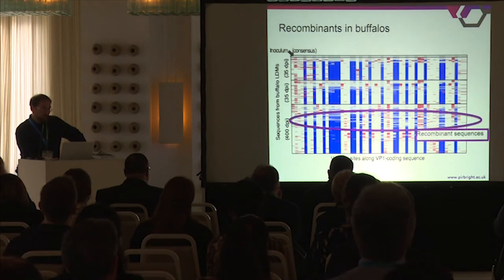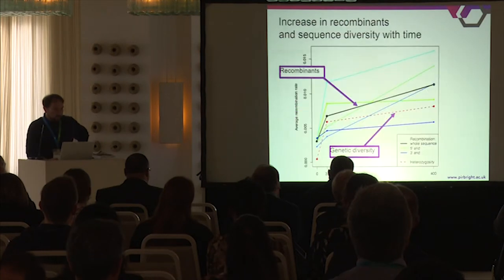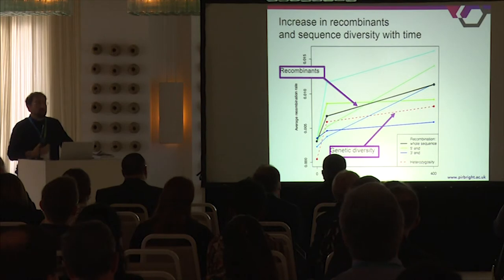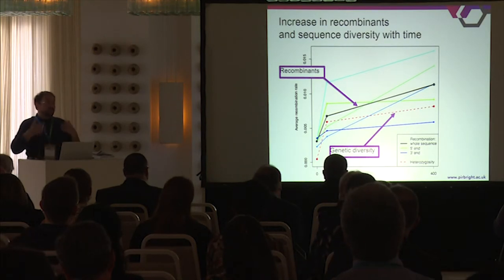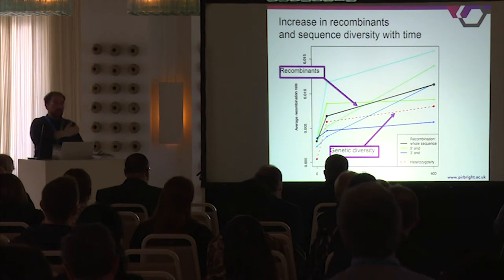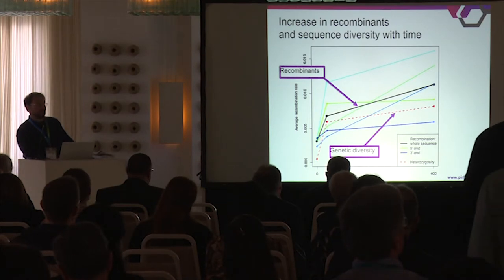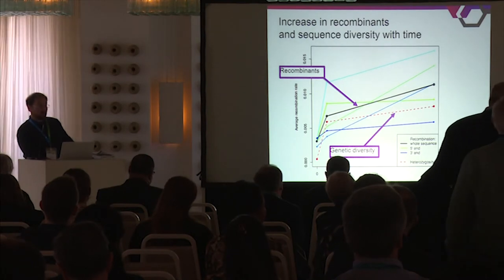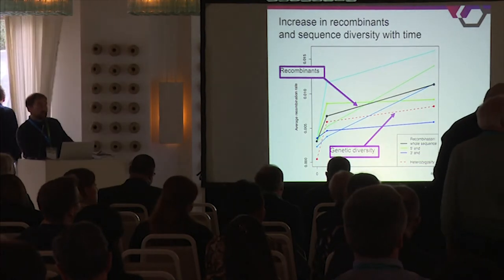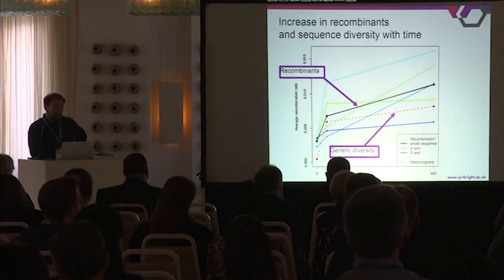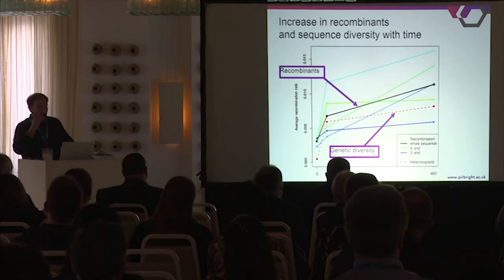These are the recombinant sequences that we observe. We can track how much recombination changes in time. If recombination goes on during the acute phase and during the persistent phase of the infection, we expect to find more and more recombinants over time — and this is precisely what we find. Looking at the black line, from the inoculum to 35 days post-inoculation, we see a strong increase in the number of recombinants, and then another increase — even if lower — up to one year post-inoculation. The genetic diversity shows a similar pattern, as expected if the virus is actually replicating all the way through.